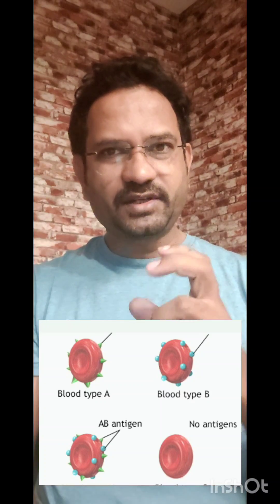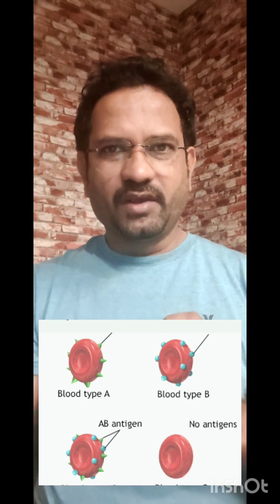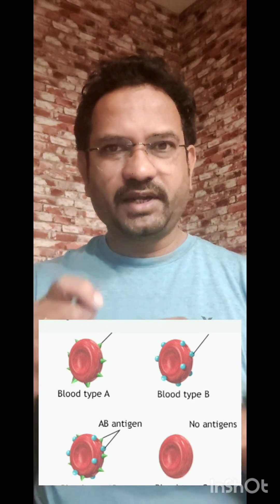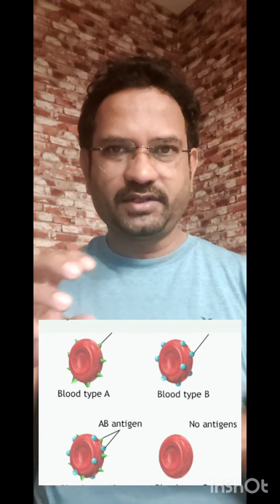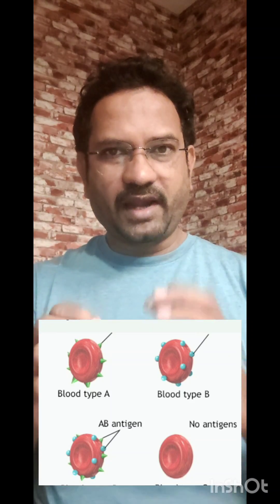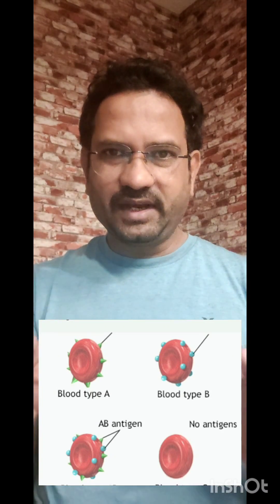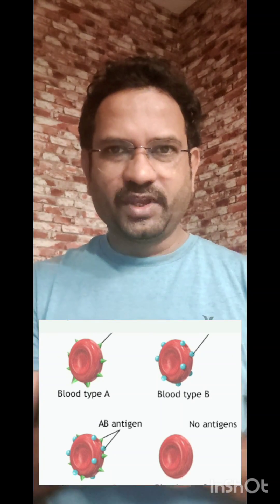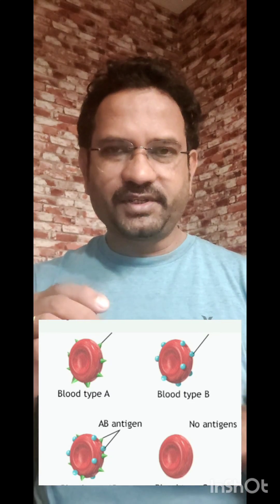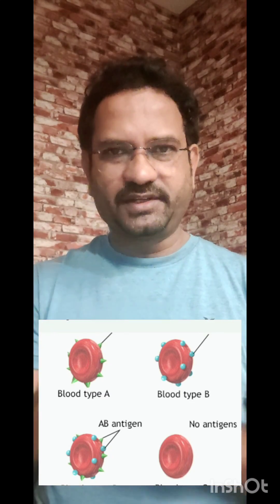Type A blood has antigen A on its red blood cells, whereas type B blood group has antigen B on its red blood cells. Type AB has both antigen A as well as antigen B present on the red blood cell, whereas type O does not have any antigens on the red blood cell.